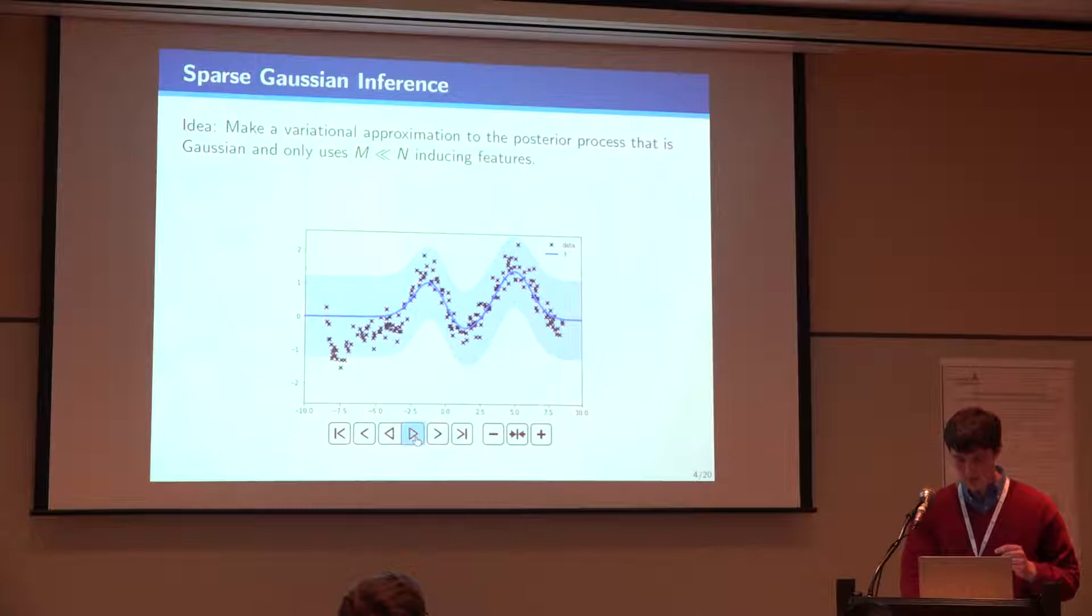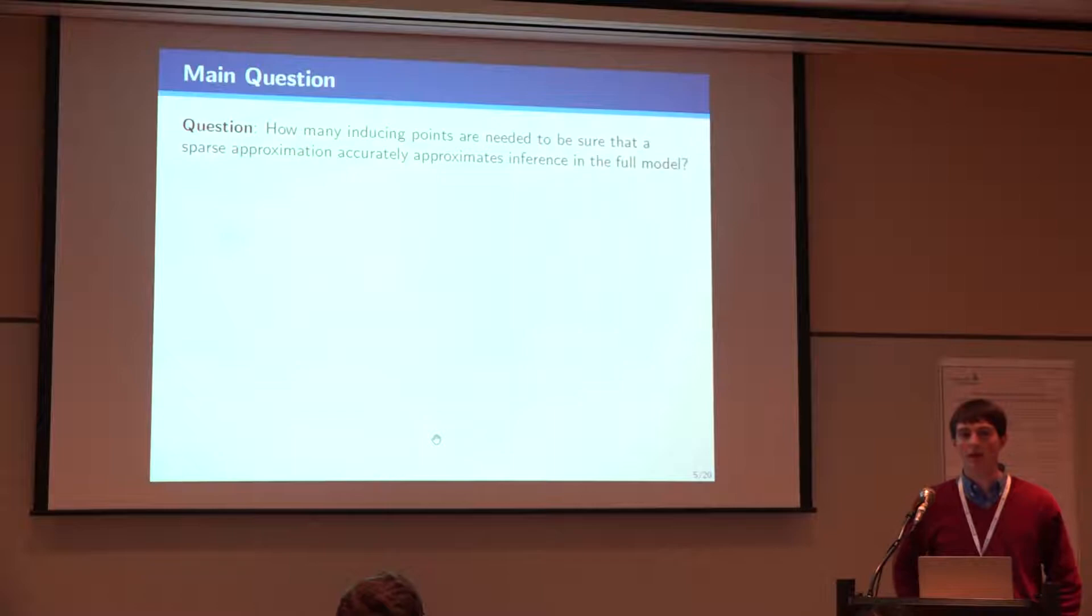So here we can see in the upper right hand corner M is 3. We can see that as we increase M we get more posterior as we might expect, but there's some computational trade-off there.